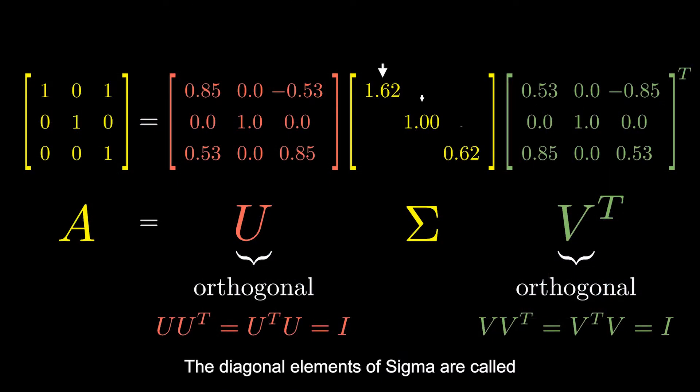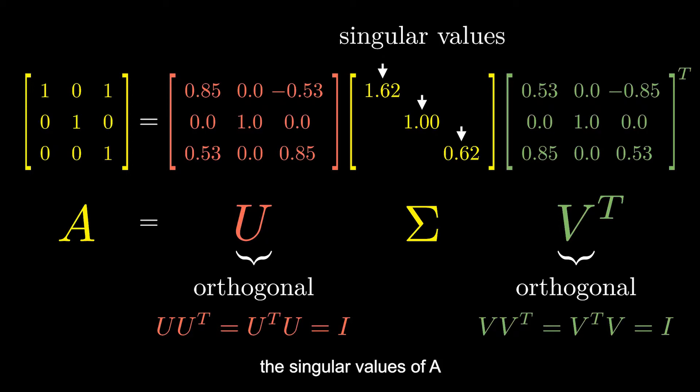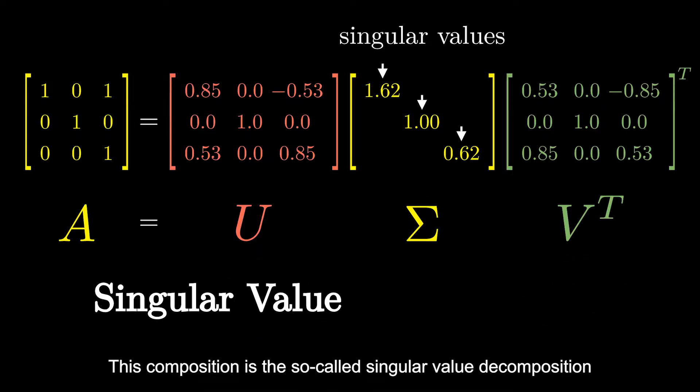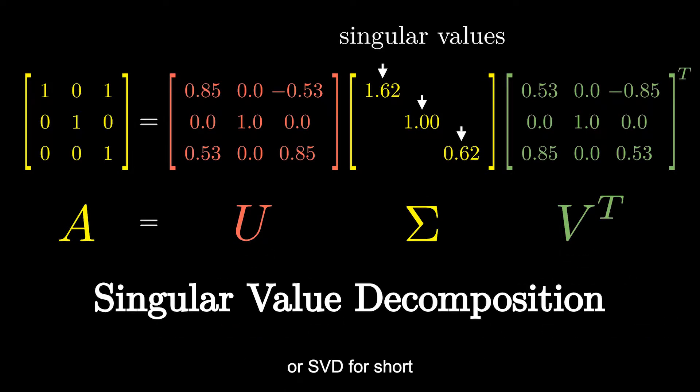The diagonal elements of sigma are called the singular values of A. Singular values are always non-negative, and we order them decreasingly. We'll see how important they are shortly. This composition is the so-called singular value decomposition, or SVD for short.